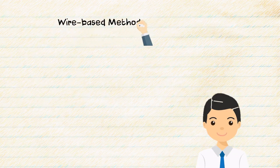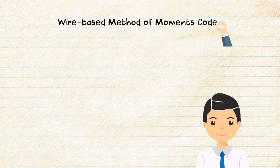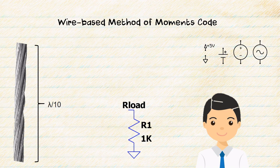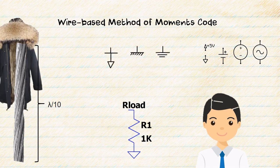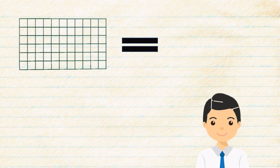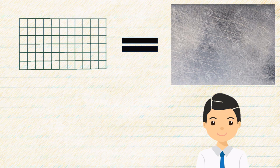SuperNEC is essentially a wire-based method of moments code. Its most basic elements are wire segments that need to be about a tenth of a wavelength long. You can introduce sources, loads, transmission lines, different grounds, and coat wires. While wire modeling may seem simplistic, you can use wire grids to simulate metal surfaces, making it suitable for any metallic surfaces. We've done comparisons and a wire grid method works the same as an actual surface platelet approach.